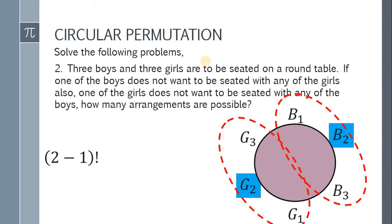Notice na pwedeng magpalit si B1 at si B3, still nasa gitna pa rin nila si B2. Ilang ways nila pwedeng gawin yung pagpapalitan? Meron lang tayong two factorial way. Tandaan na pwede rin magpalit si G1 at si G3. So meron na naman tayong another two factorial way. Kasi kung magpapalit na posisyon si G3 at saka si G1, still nasa gitna pa rin nila si G2.